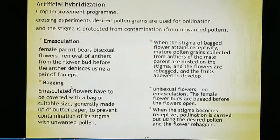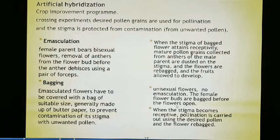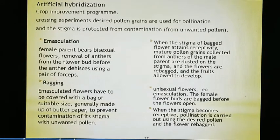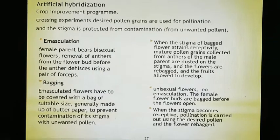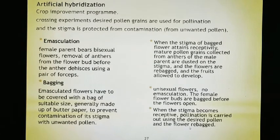When the stigma of the bagged flower attains receptivity, pollen grains collected from the anthers of the male parent are dusted on the stigma and the flowers are re-bagged, and fruits are then allowed to develop. This ensures we know which flower was used and can track the quality of the fruit. For unisexual flowers, emasculation is not required — instead the female flower buds are bagged before the flower opens. When the stigma becomes receptive, the bag is opened, desired pollen is dusted on the stigma, and the flower is re-bagged.